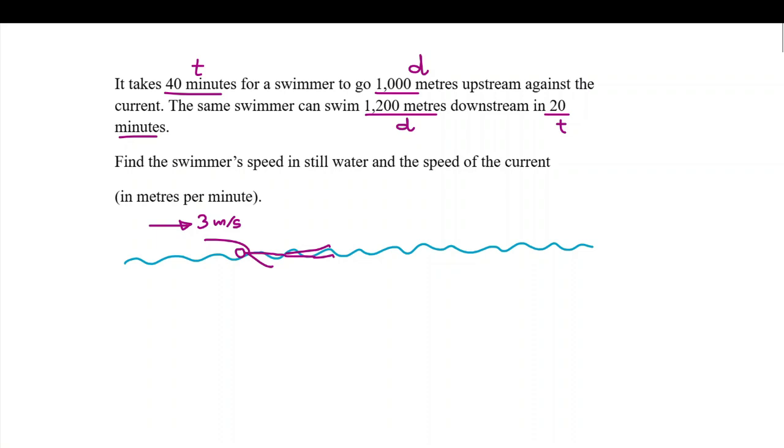Now, if the swimmer can swim at 5 meters per second, when the swimmer is going against the stream, overall, the swimmer is actually traveling at 2 meters per second, because the swimmer can go 5 upstream. The stream is going in the opposite direction, taking him 3 backwards. So, overall, the swimmer is going 2 forwards.